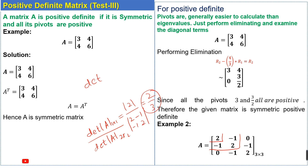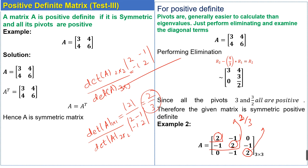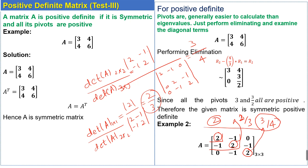The first pivot is 2 and the second pivot is 2/3. For the third pivot, we take the determinant of the 3×3 sub-matrix [2, -1, 0; -1, 2, -1; 0, -1, 2], which equals 4, divided by the determinant of the 2×2 sub-matrix, which is 3. This gives the third pivot as 4/3. Since all pivots are positive, the given matrix is a positive definite matrix.